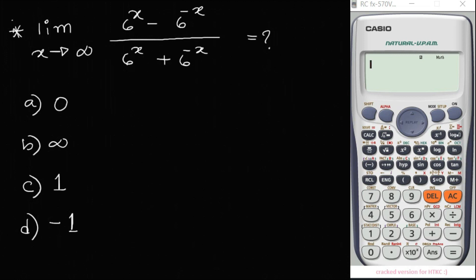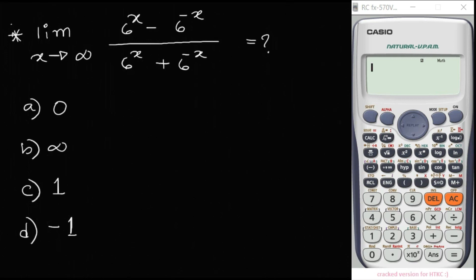So let's start the video. On the meta key of a problem — it's a limited method. I'm in free, that will be a total — so limited in free. The limit extends to infinity: 6 to the power x minus 6 to the power minus x, divided by 6 to the power x plus 6 to the power minus x. I mean to apply L'Hôpital's rule.